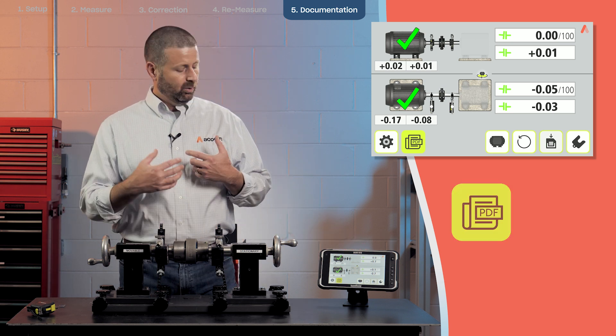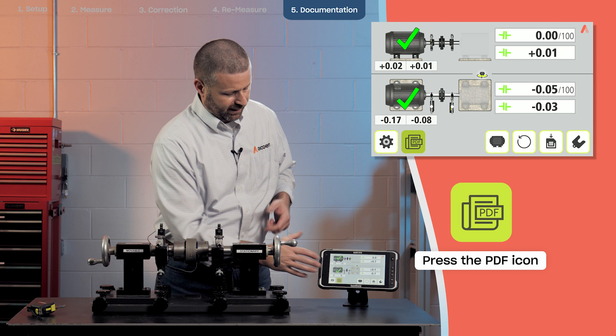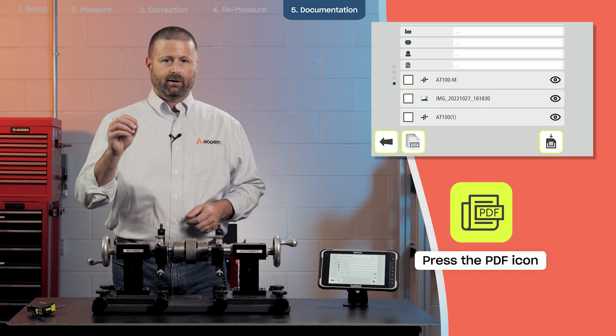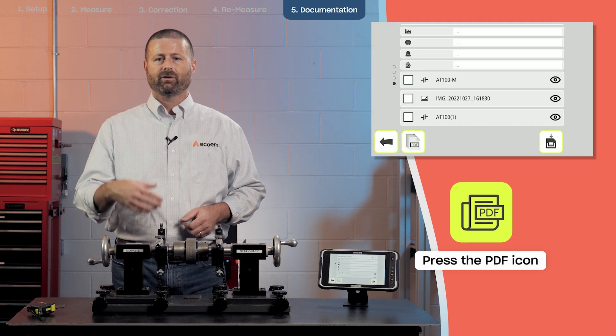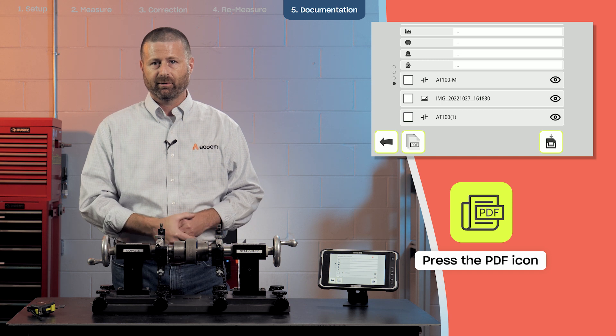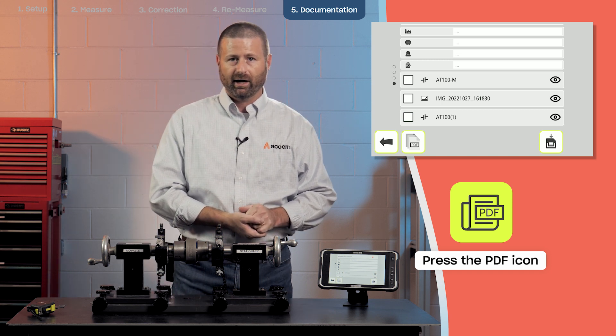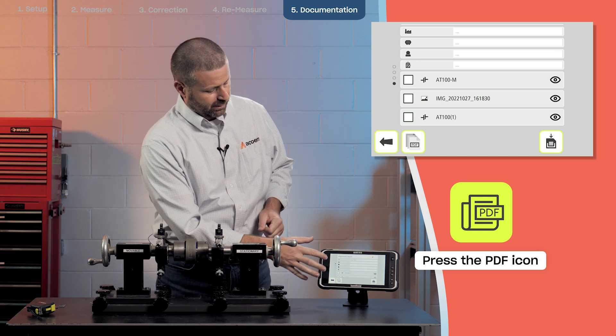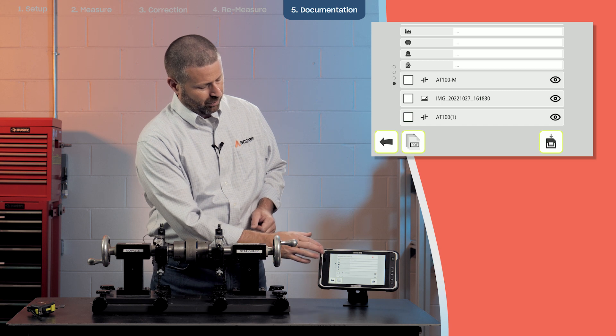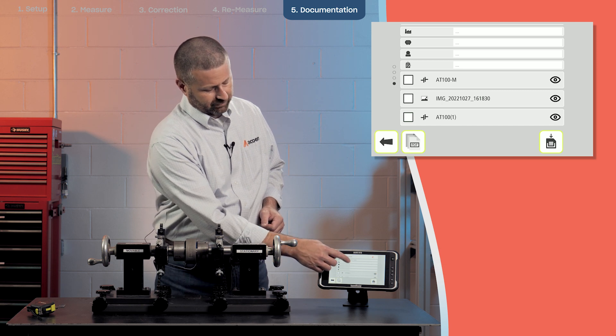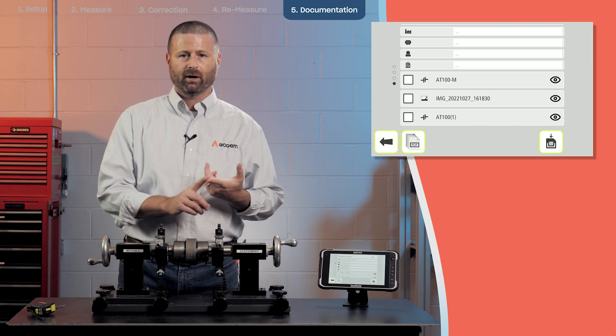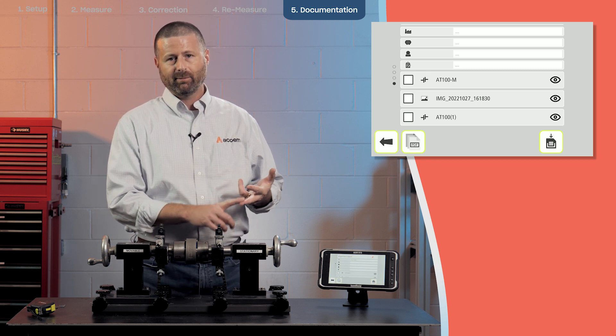Then we're going to produce our final report by combining the shaft alignment with, if we had saved data from a soft foot adjustment beforehand, we can do that as well. In generating the PDF report, there are several lines available for naming, putting a plant name in, a user name in,